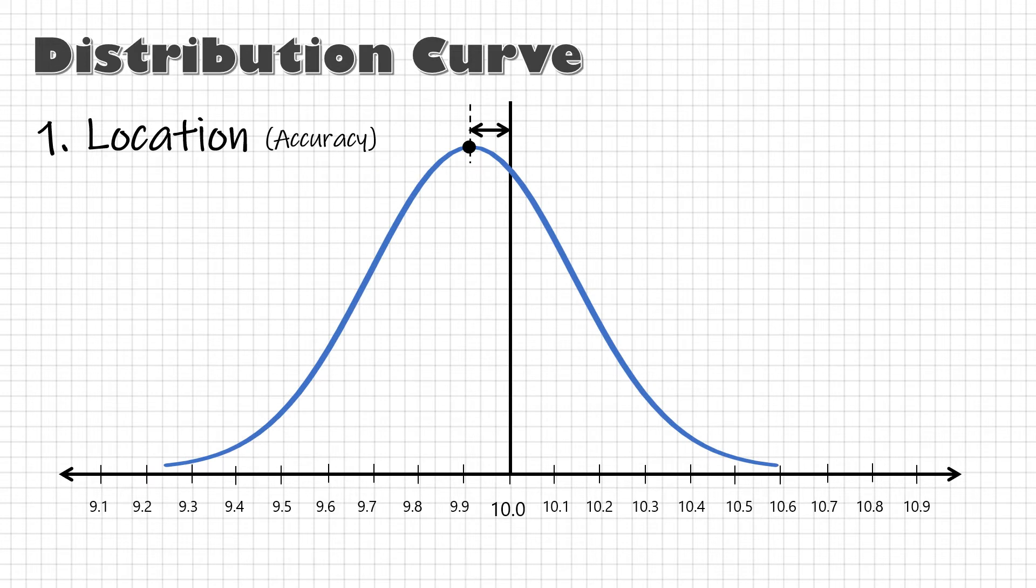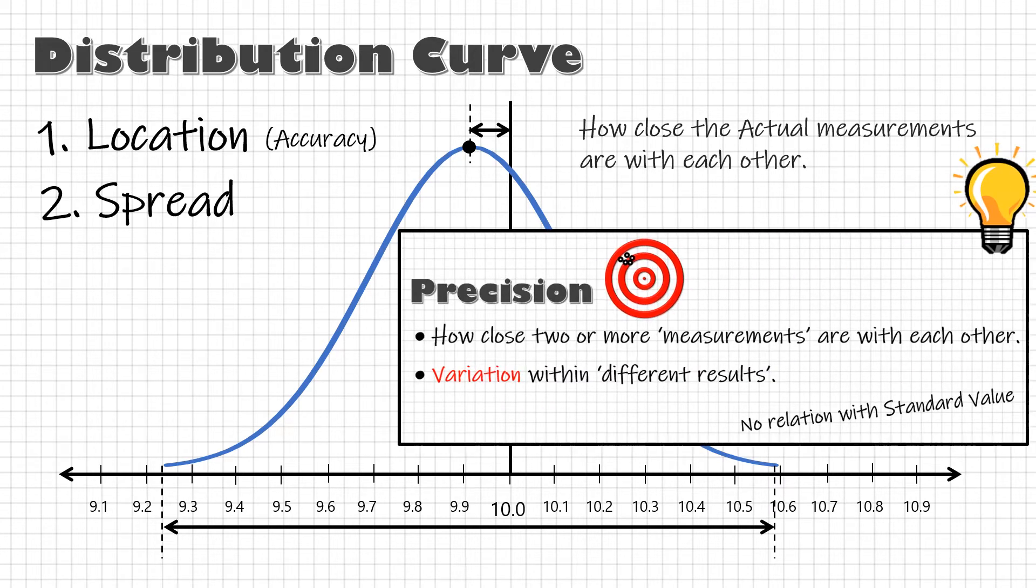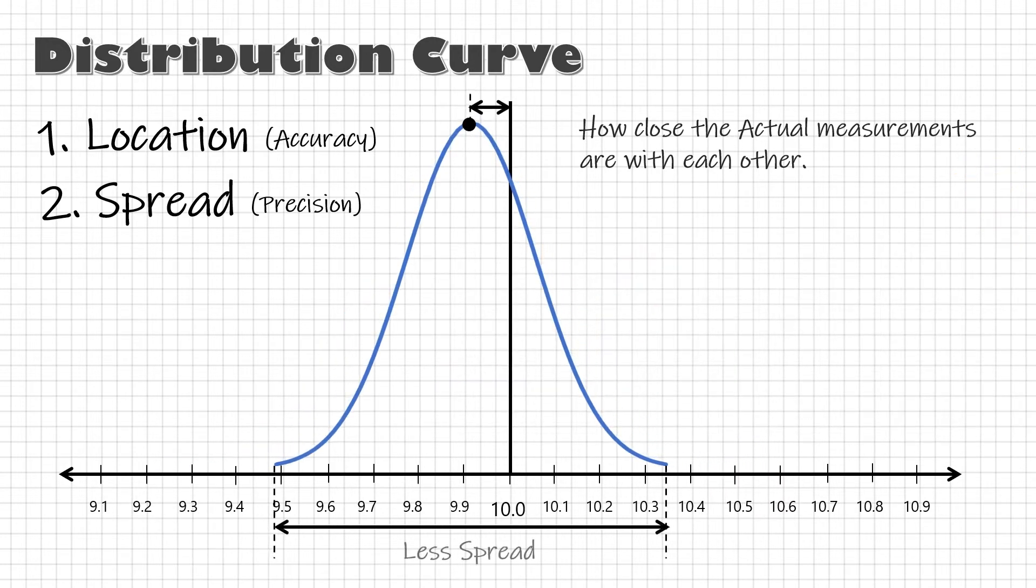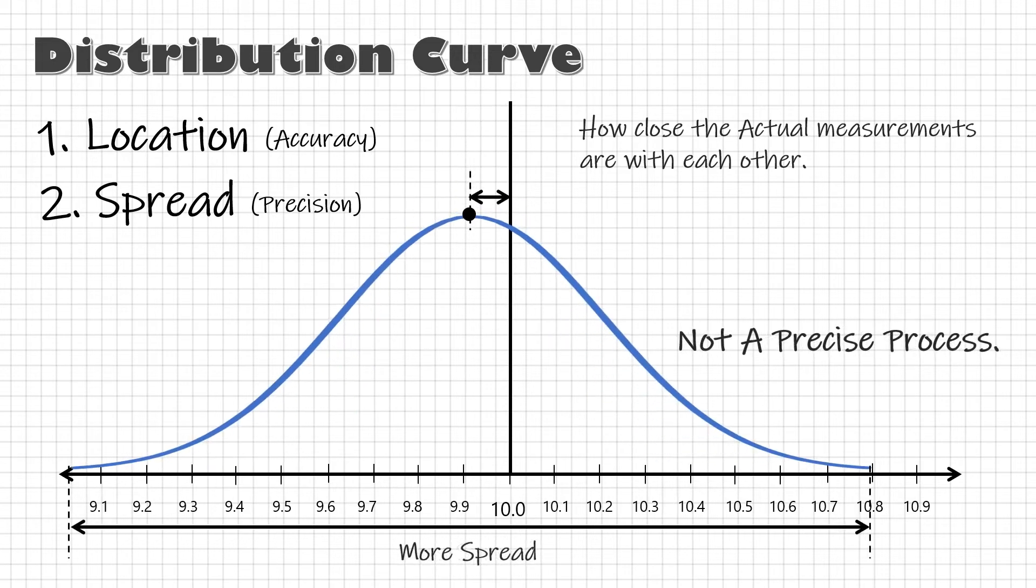Next is spread, width of values from smallest to largest. It is how close my actual values are with each other. That's right, precision. Spread represents precision. So if spread is less, the process is precise. And if the spread is more, the process is not precise.